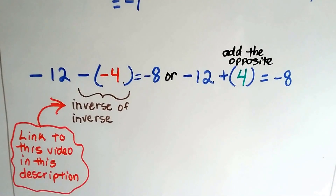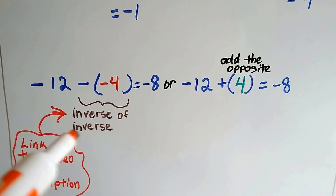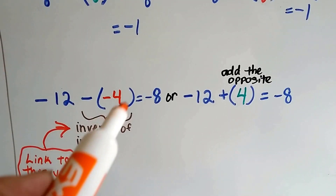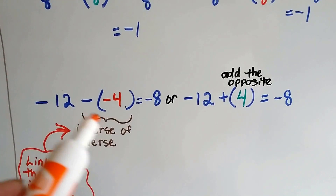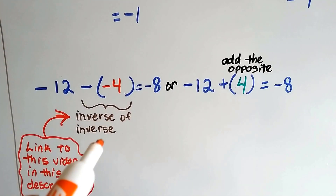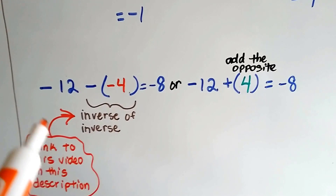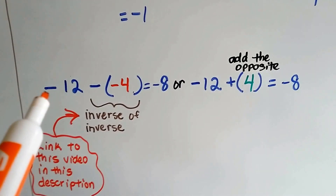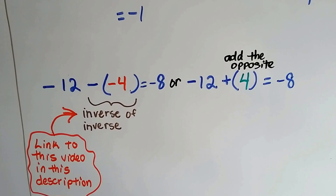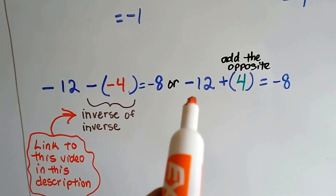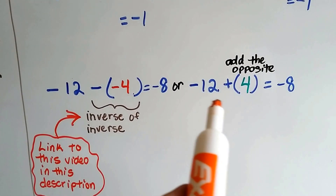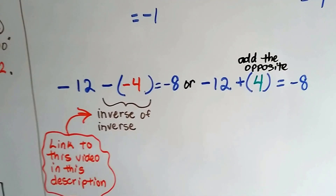If we have negative 12 and we take away a negative 4, this is the inverse of the inverse. Taking away a negative 4 from negative 12 equals negative 8. It's the same thing as having negative 12 and adding 4 — we still get negative 8. It goes closer toward zero. That's adding the opposite.